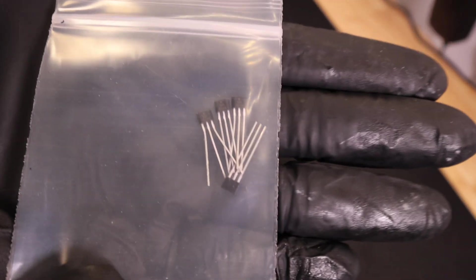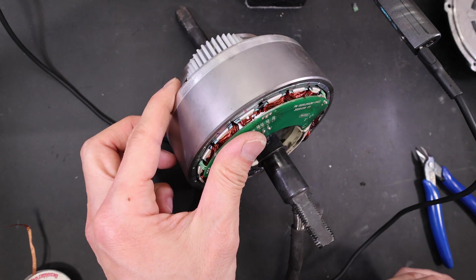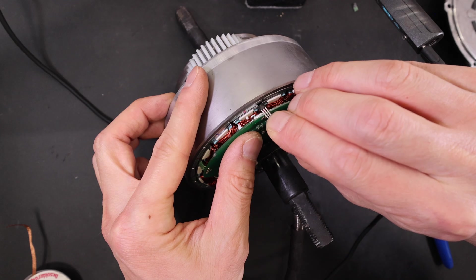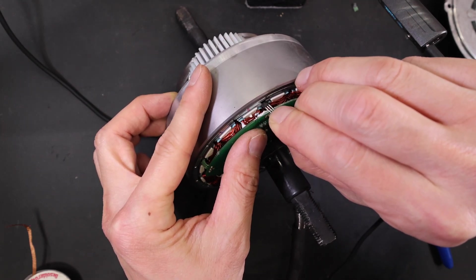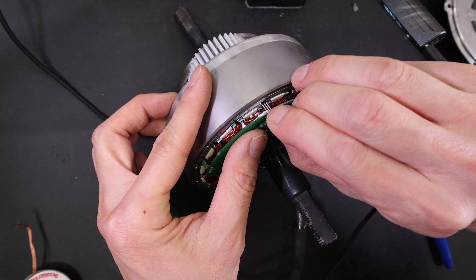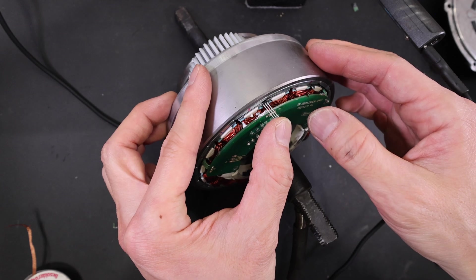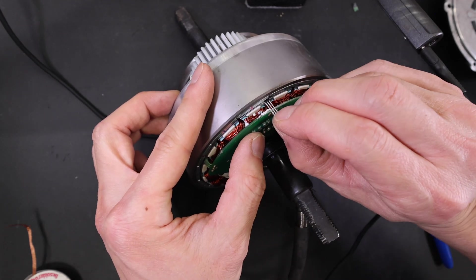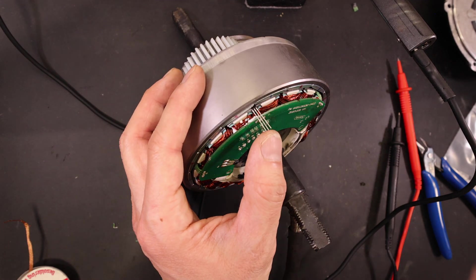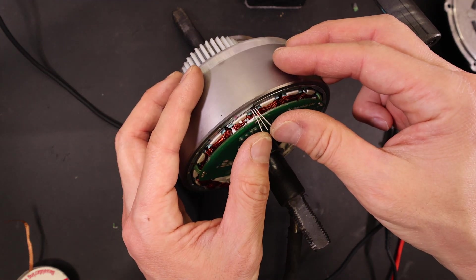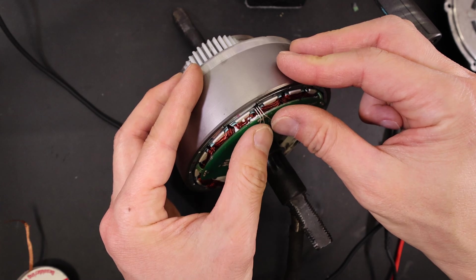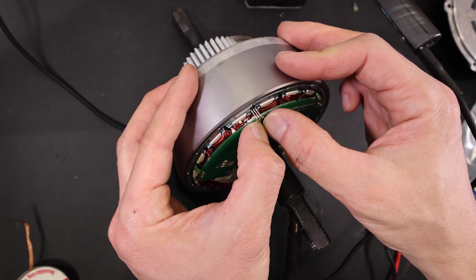So these are the replacement hall sensors. I'll put a link below. They are Honeywell S41 hall sensors. It's been said that the Bafang motors or these hub motors that are made in China use probably cheaper aftermarket hall sensors, and that's probably the reason why this one went. I was thinking about replacing the other two, but I decided not to just because I was kind of lazy, I guess.